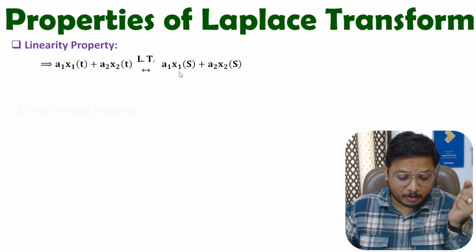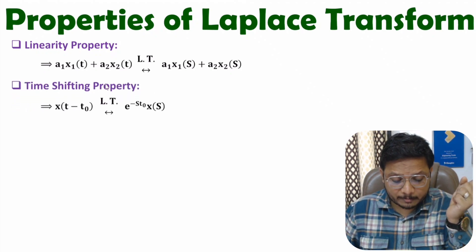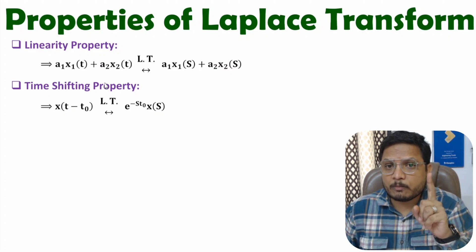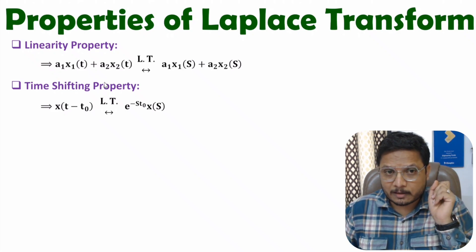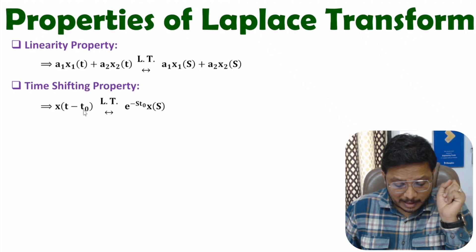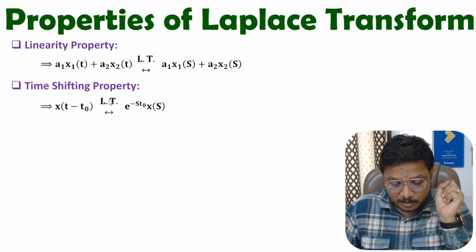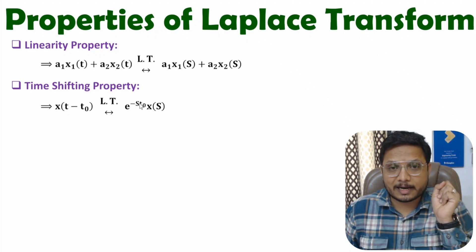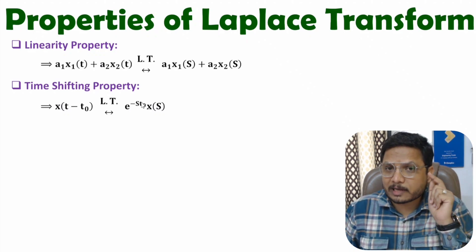Now let me discuss the second property, which is based on the time shifting property. If we have a signal x(t) whose Laplace transform is X(s), and we apply a time shift so the signal becomes x(t − t₀), then after the Laplace transform we multiply by e^(−s·t₀). If you have a positive time shift, then you multiply by e^(+s·t₀).